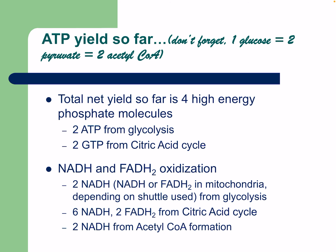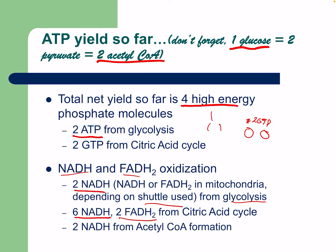Regarding ATP yield so far: one glucose equals two pyruvates, which equals two acetyl-CoAs. The total net yield of high-energy phosphates so far is four: two ATPs from glycolysis and two GTPs from the citric acid cycle (which occurs twice). We also have NADH and FADH2 for oxidation: two NADH from glycolysis, six NADH and two FADH2 from the citric acid cycle, and two NADH from acetyl-CoA formation — all to be used in the electron transport chain.